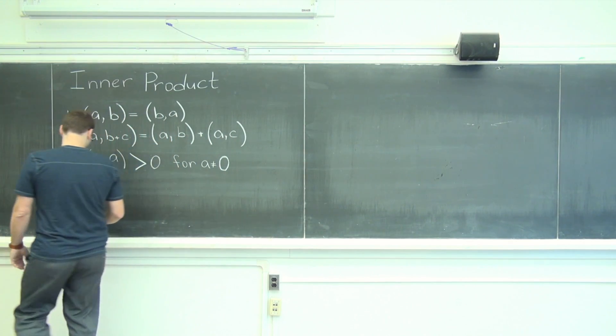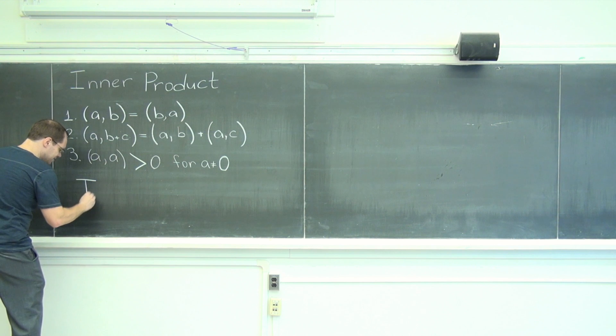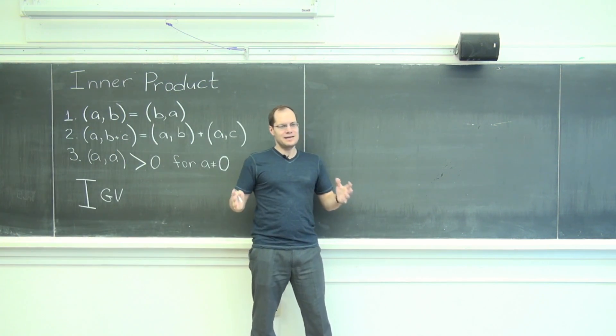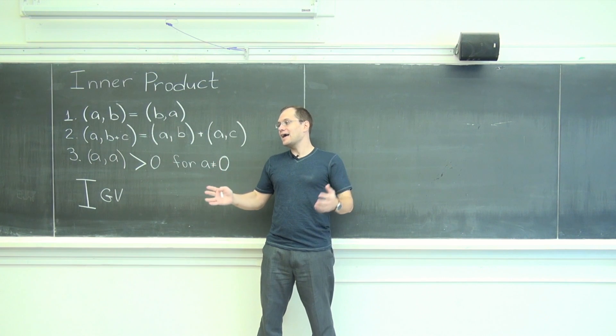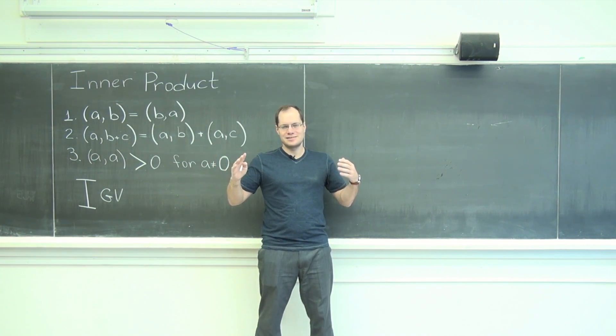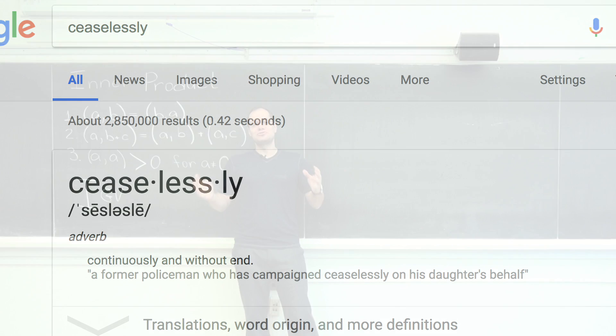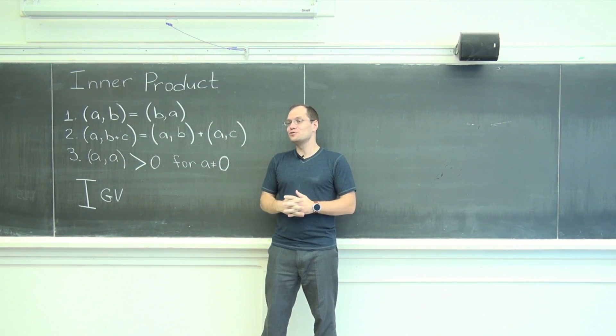So the first example is geometric vectors. This will be an exercise in what I advocate ceaselessly. Is that the right word? Yeah.